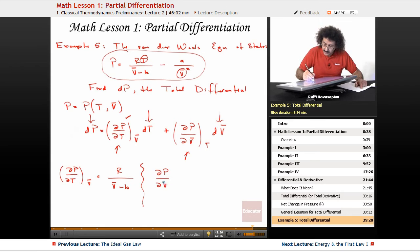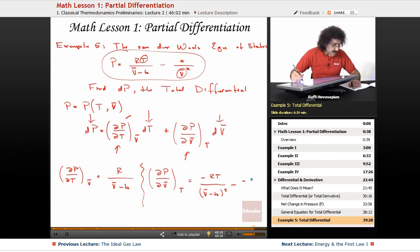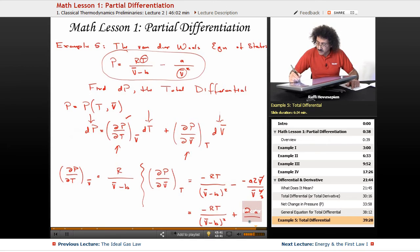Now let's take the derivative with respect to V, holding T constant. What you end up with is minus RT over V minus B squared, minus A times 2 times V over V to the fourth. And then when I cancel, I'm left with my final expression, which is minus RT over V minus B squared. The minus minus becomes a plus, and it becomes plus 2A over V cubed.